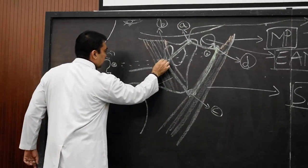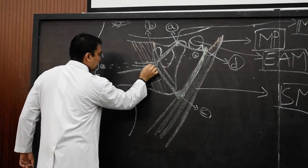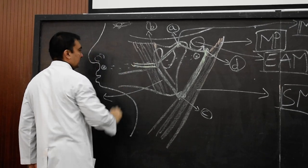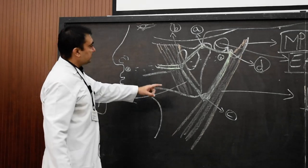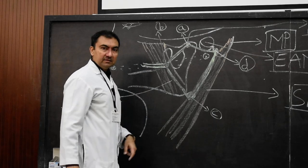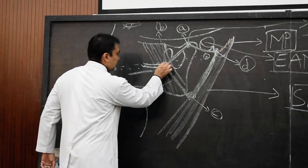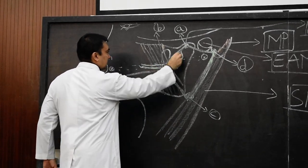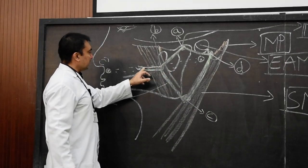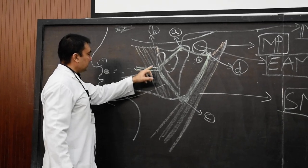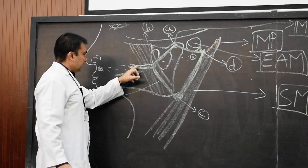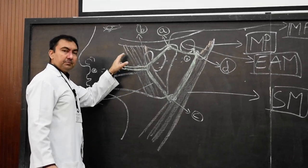Therefore, the parotid duct will be represented by the middle one-third of that line. Remember, this parotid duct passes through the middle of the anterior border of the parotid gland. The parotid duct starts from the anterior border of the parotid gland, and its passage goes anteriorly downwards, then it pierces medially.